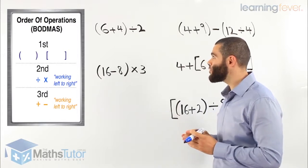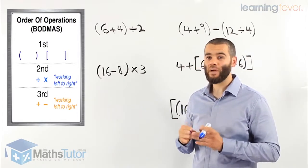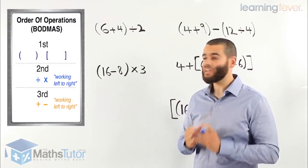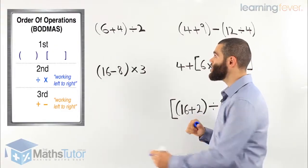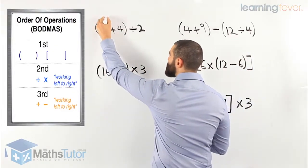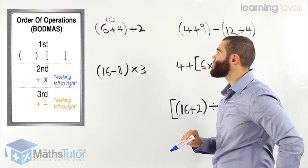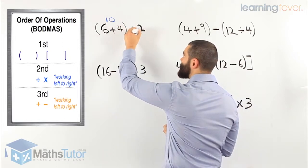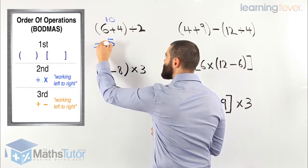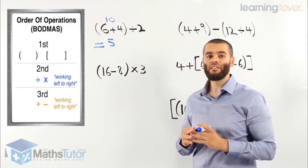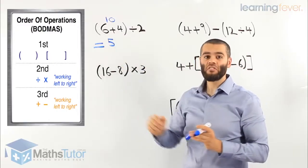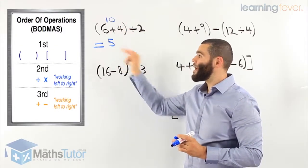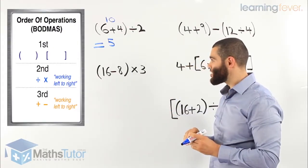In this example we have, in brackets, 6 plus 4, close bracket, divided by 2. We notice we have to follow the order of operations — do the brackets first. So here, 6 plus 4 is 10. We've completed the brackets. The next stage after the brackets is the division: 10 divided by 2, our answer is 5.